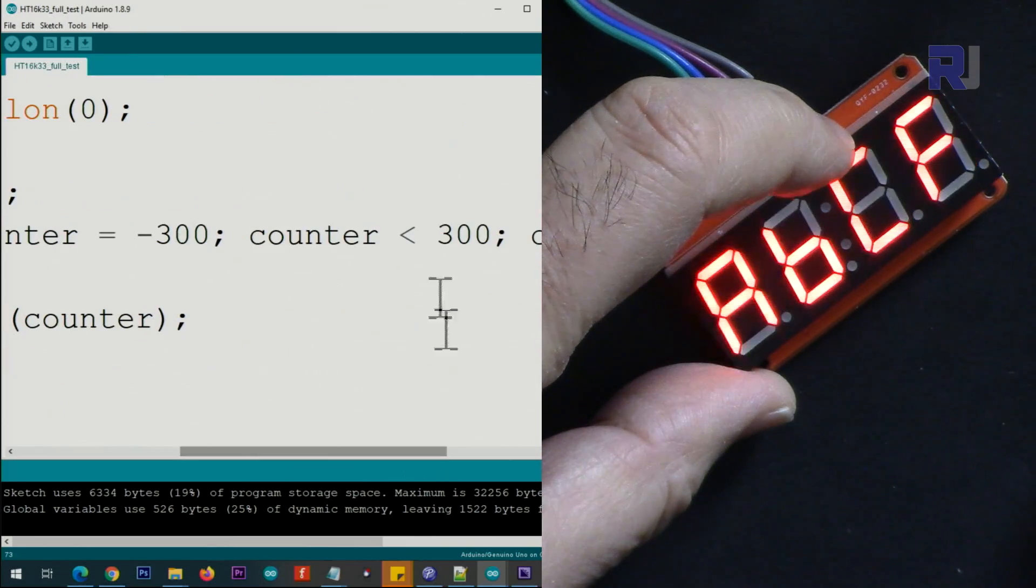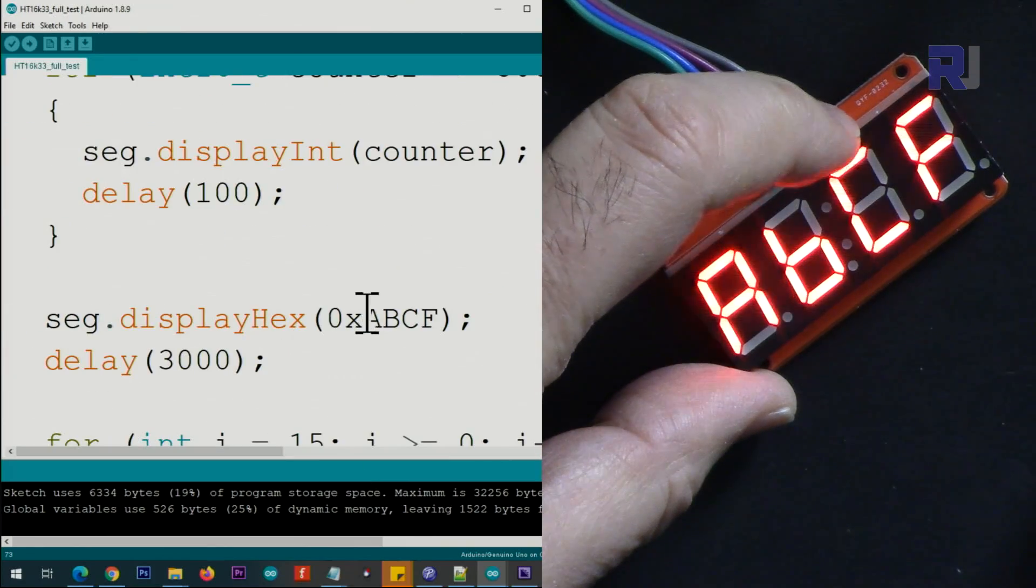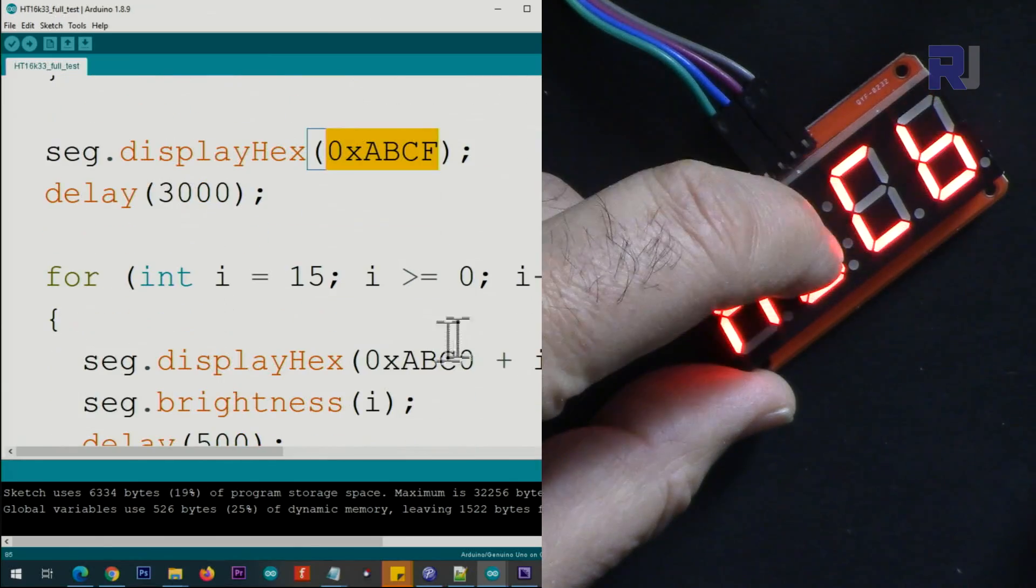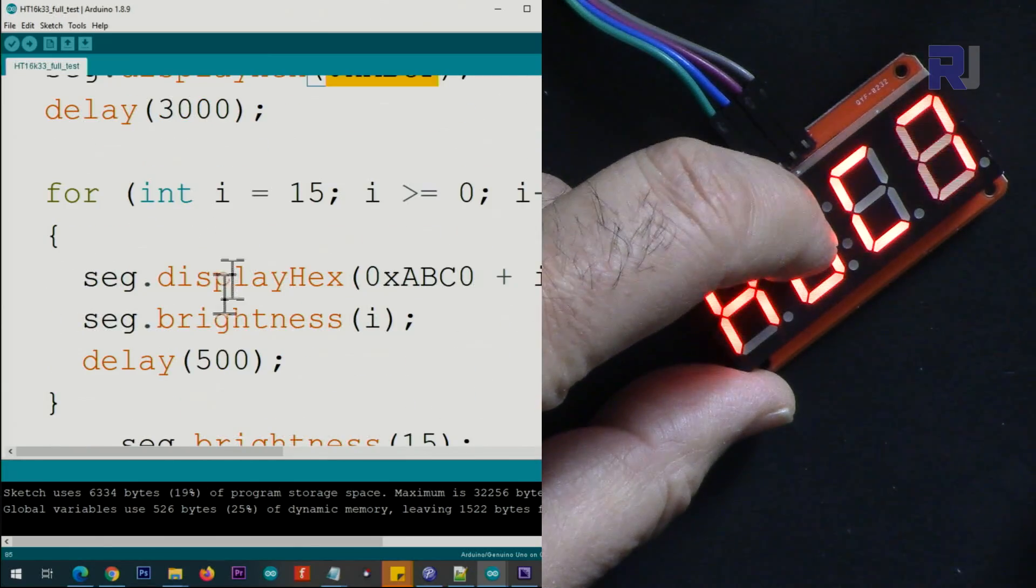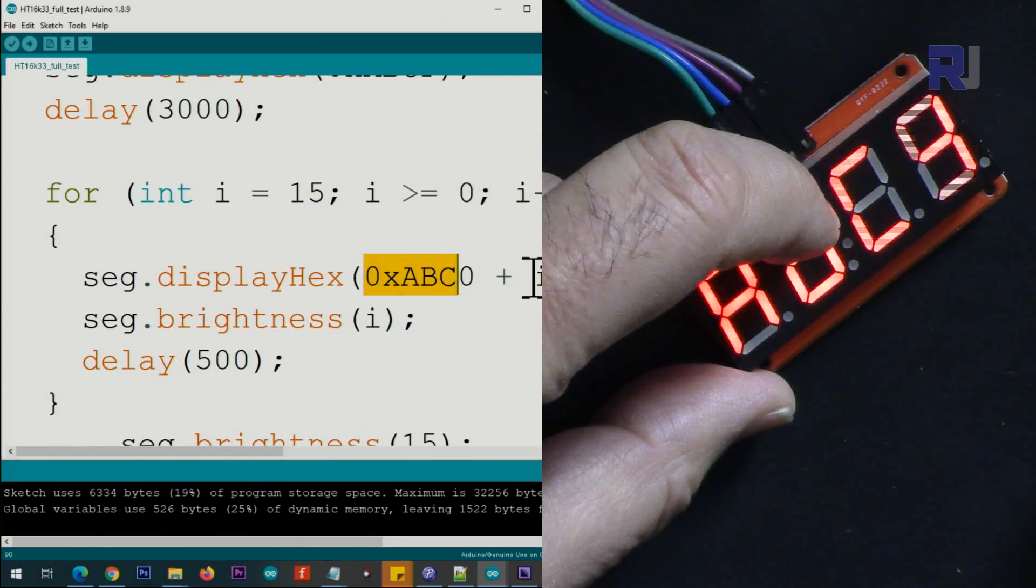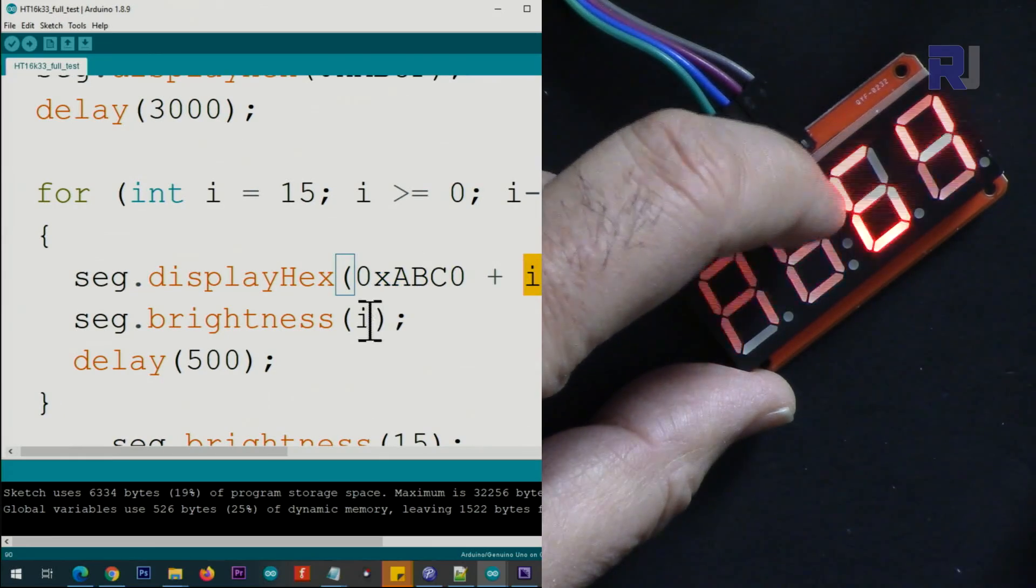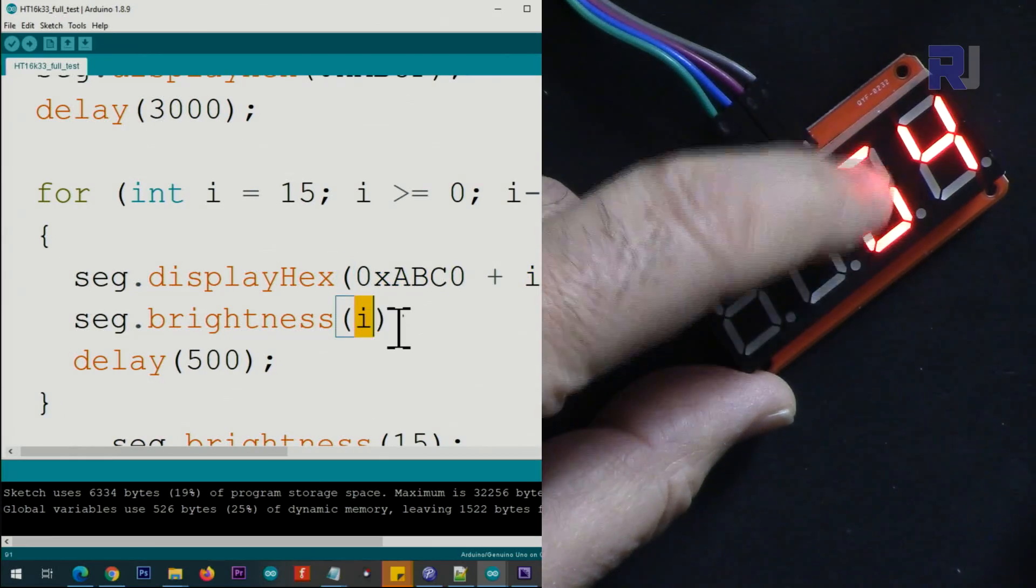And then after that we have this value of hex, and then this loop is continuously printing the hex value with incremented values and also increases and decreases the brightness.